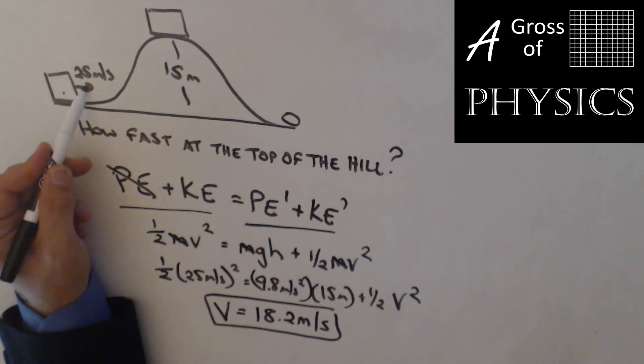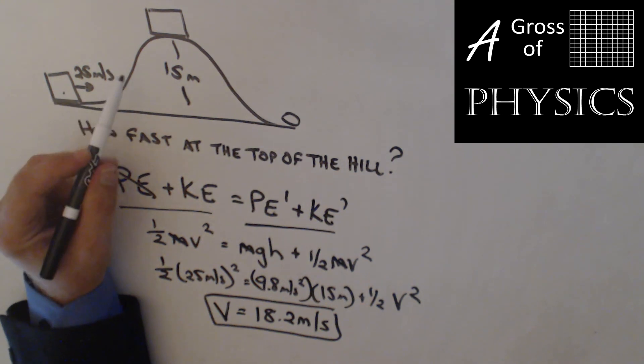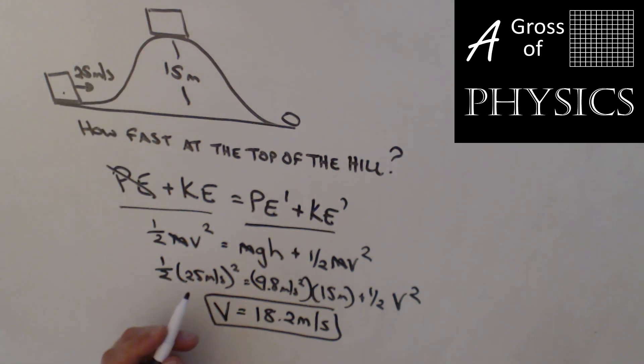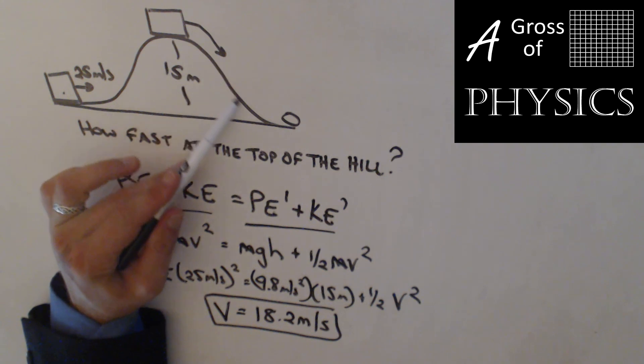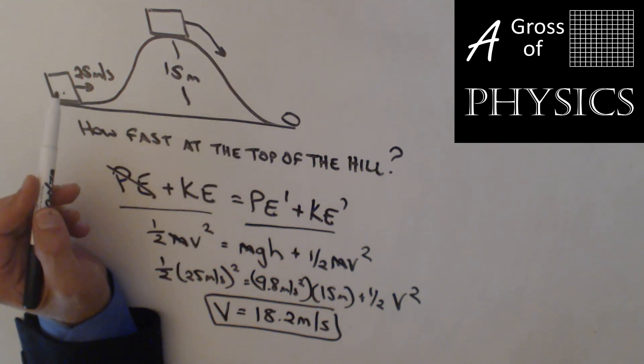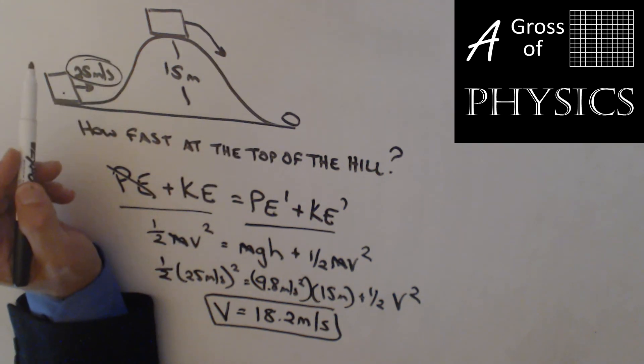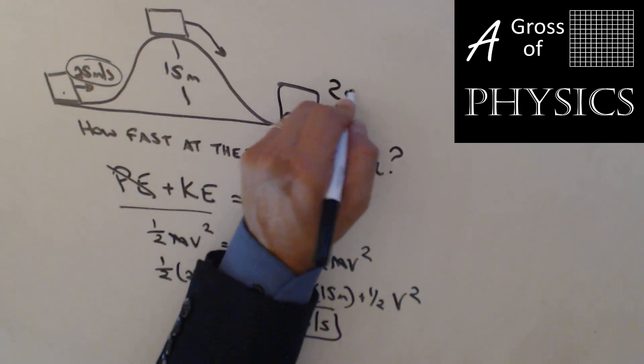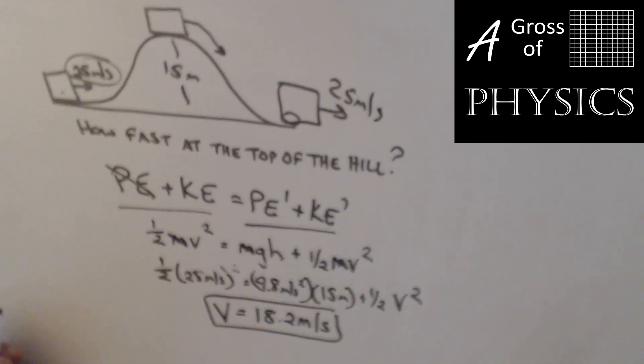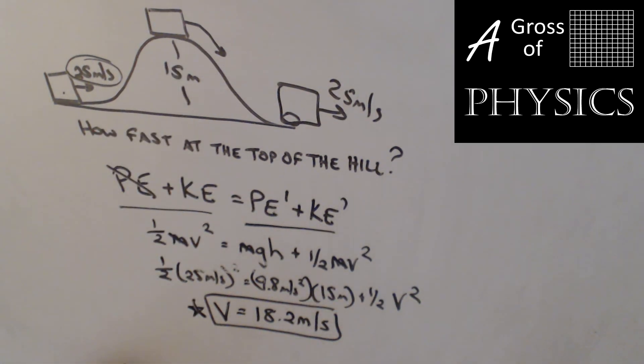Now that makes sense, because we started at 25, we went uphill, we lost some kinetic energy, gained potential, and it goes slower at the top. Now if this continues along and we get to the bottom of the hill, how fast will it move? Well, all the potential energy it gained will be turned back into kinetic, so we'll be moving back at 25 meters per second. So this would be 25 meters per second. But at the top of the hill, 18.2.